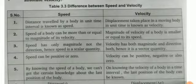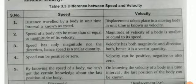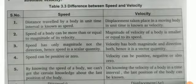Second point in speed: speed of a body can be more than or equal to the magnitude of its velocity. In velocity, second point: magnitude of velocity of a body is smaller or equal to its speed. Third point of speed: speed has only magnitude, not direction, hence speed is a scalar quantity. In velocity, velocity has both magnitude and direction, hence it is a vector quantity.